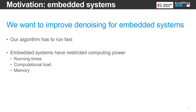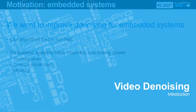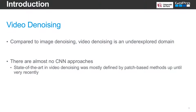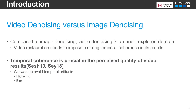Embedded systems are limited in computational resources, so the denoising algorithm has to be very fast. About the problem of video denoising, we note that it is a less popular subject compared to image denoising, for example, as we have fewer publications. The reason for this is possibly the fact that video denoising has additional complexities.